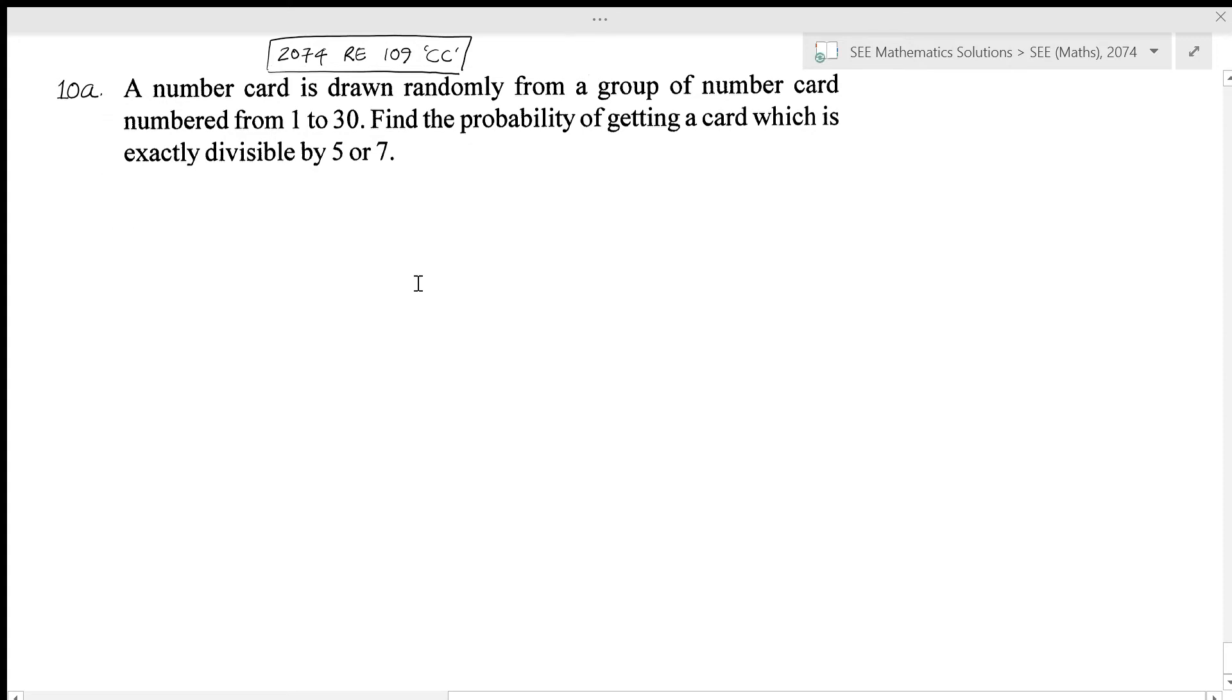Hello friends, welcome back. Now we'll be doing problems from probability from 2074 RE109CC set. This is problem 10A, and here we have to find the probability of getting a card which is either divisible by 5 or 7.